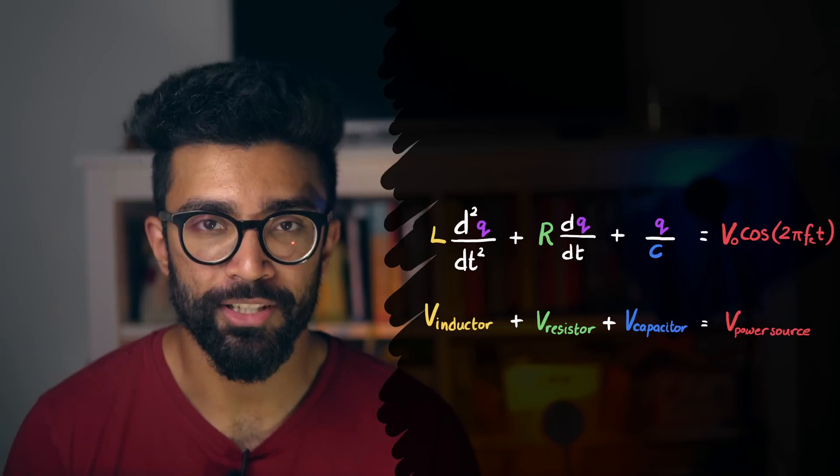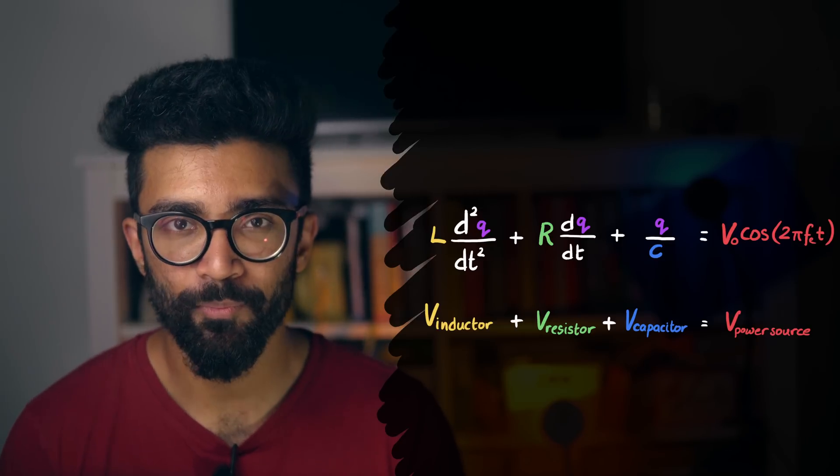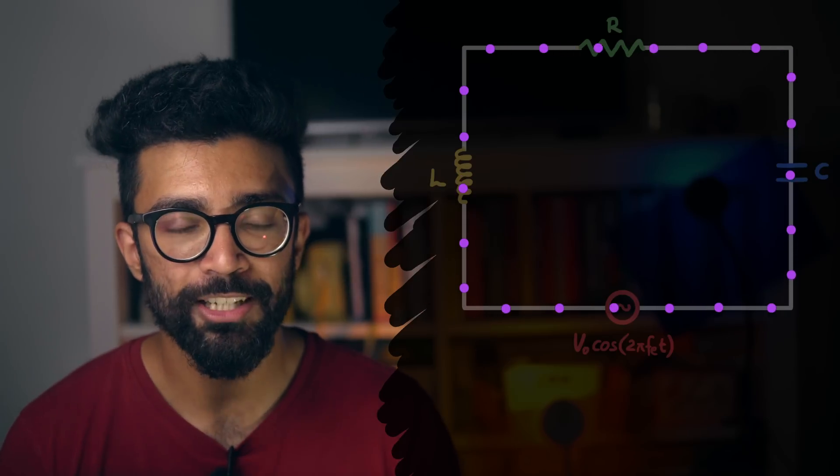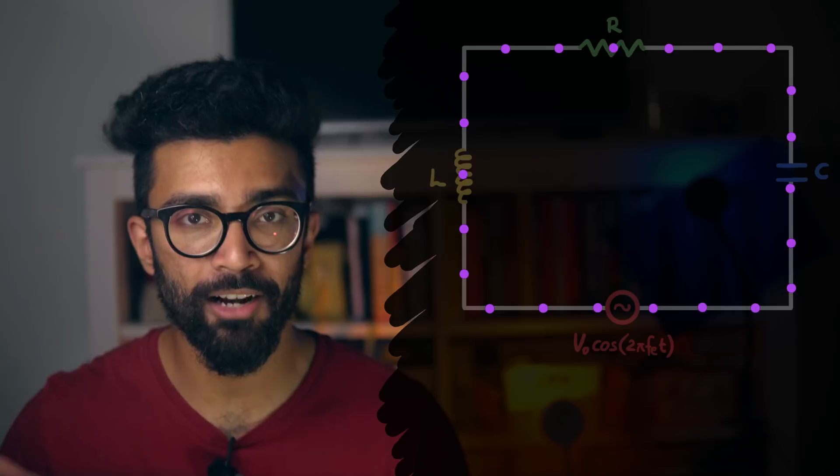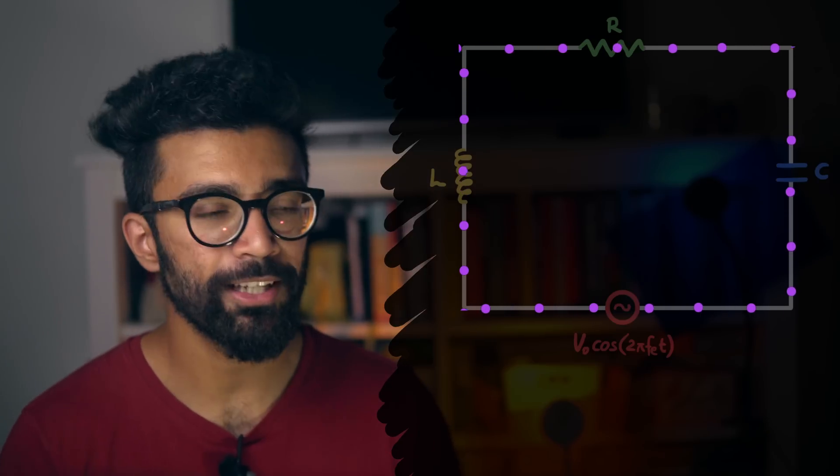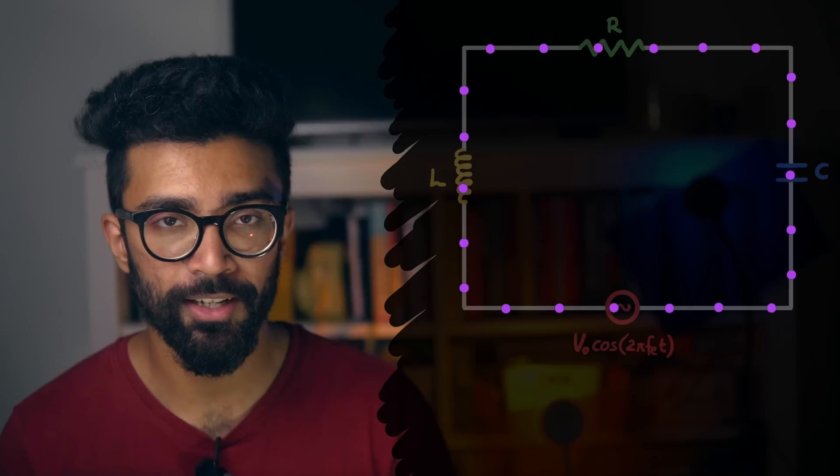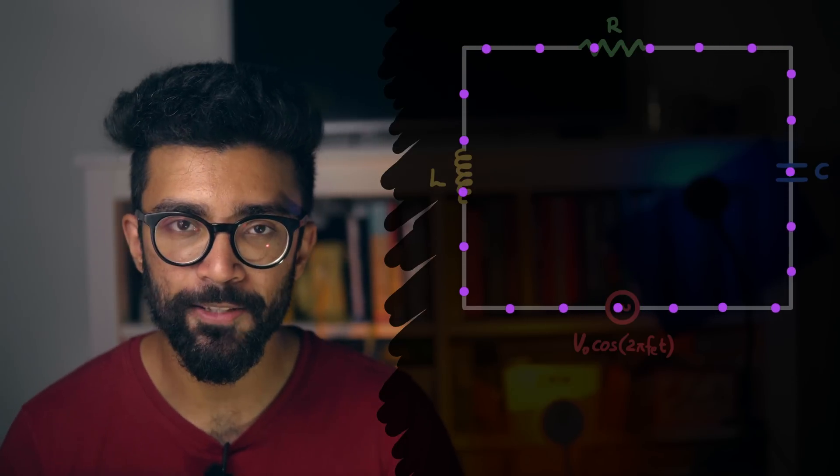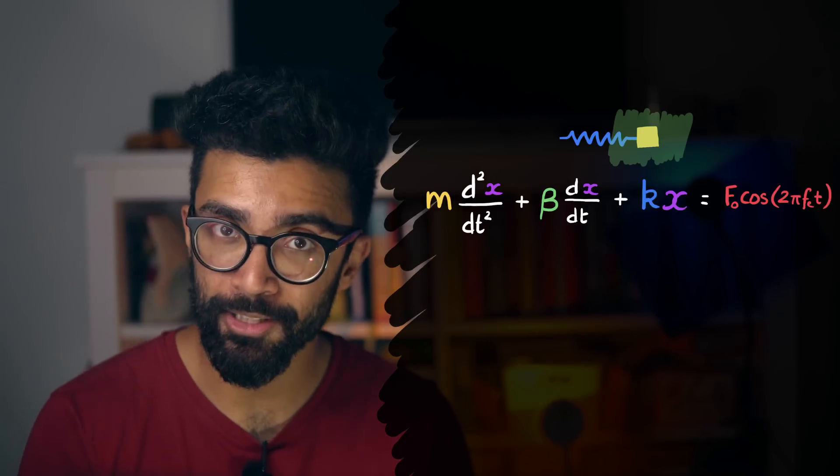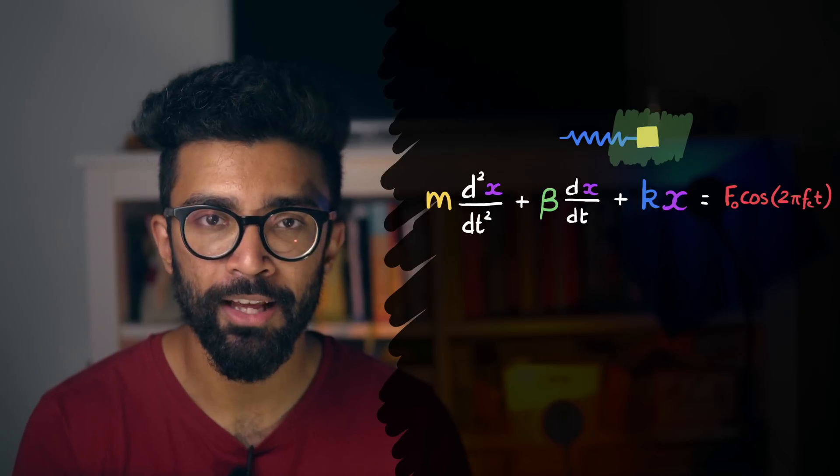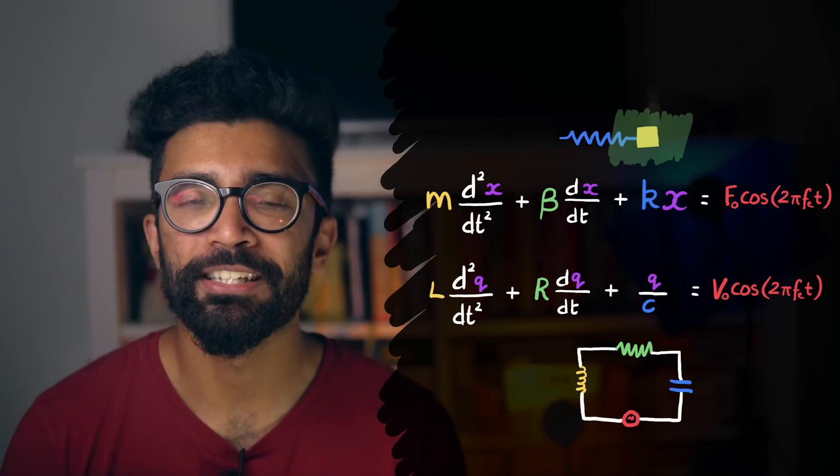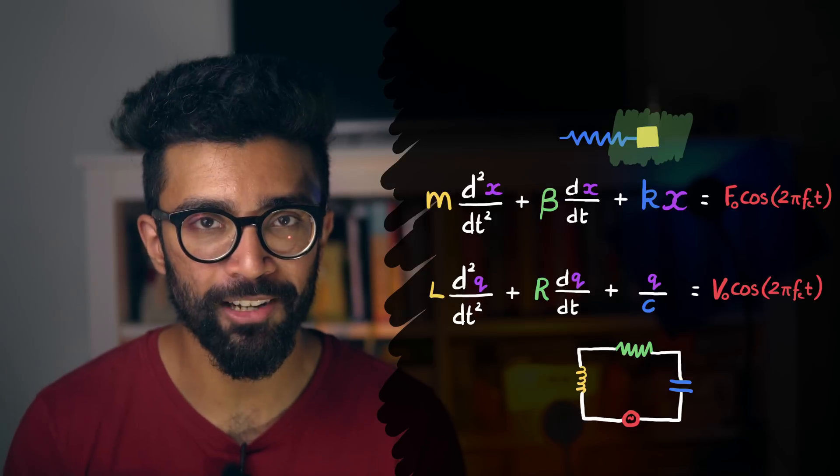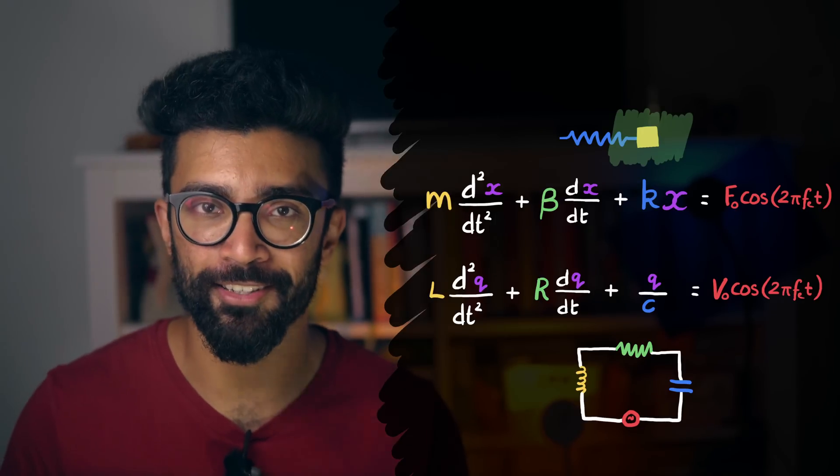But the really interesting thing is that this system is an oscillator of sorts. Charge is bouncing back and forth along our circuit, because it's an alternating current circuit. And hence, we can use the exact same equation with slightly different quantities to describe both a mechanical oscillator, like the mass spring system, and an electrical oscillator, like this circuit here. I find this really cool. A beautiful parallel across two very different areas of physics.